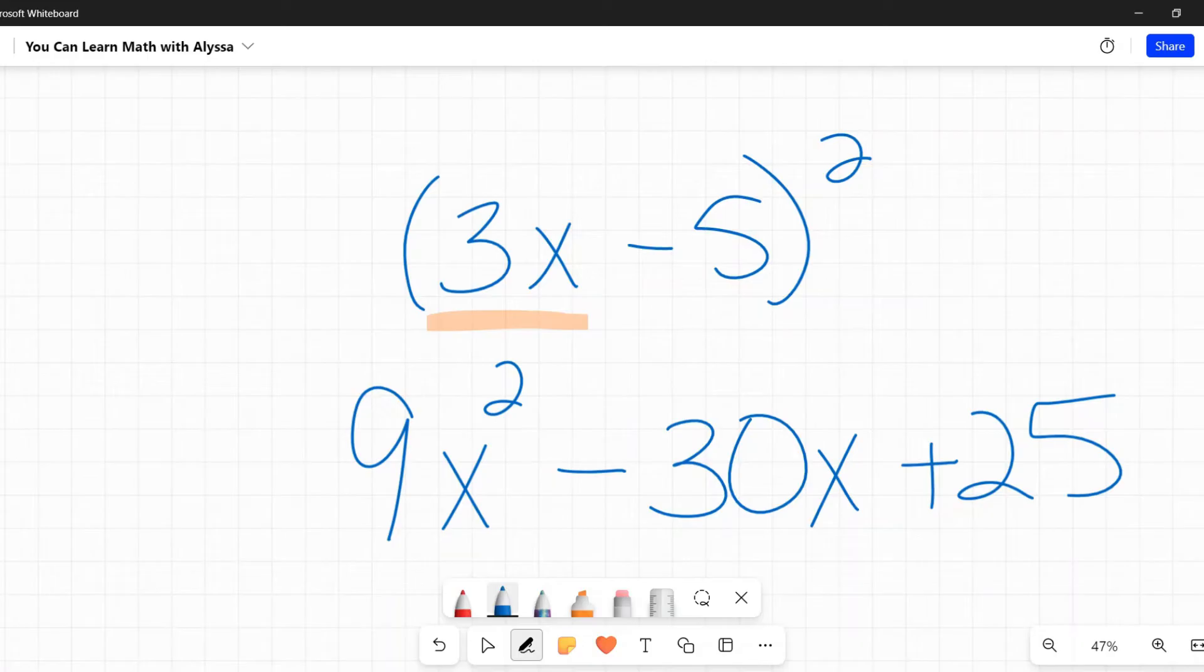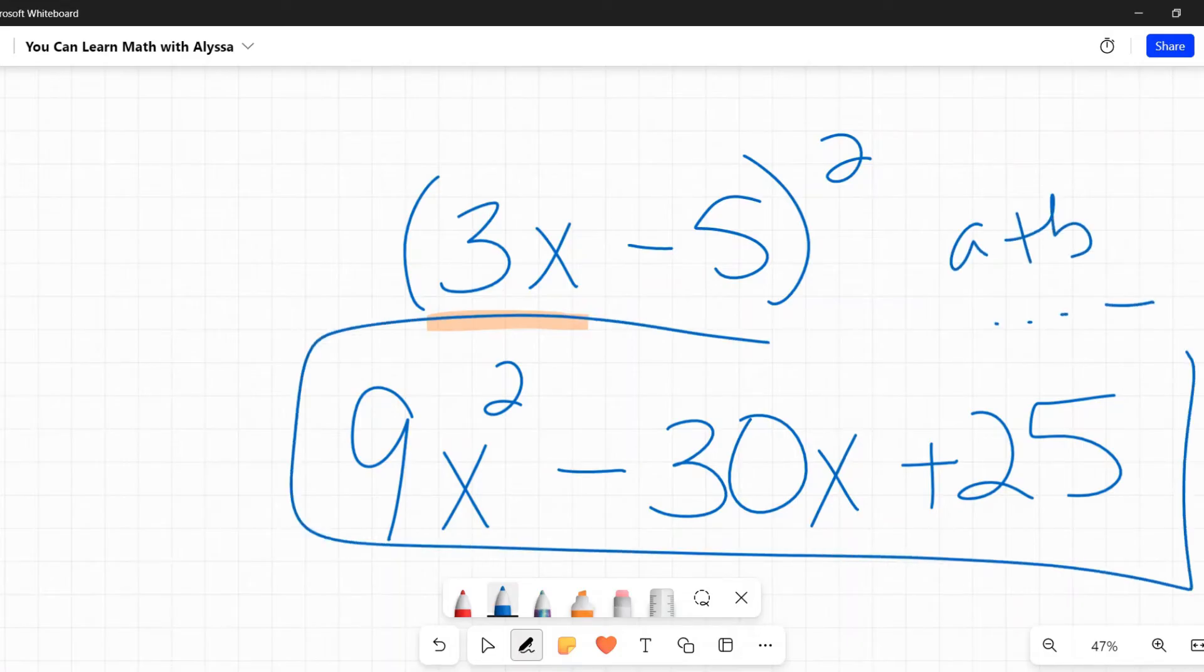Now, this depends on your teacher and your book and whatever worksheet you're working on. Sometimes they want you to write out the whole 3x minus 5 times 3x minus 5. Whatever they tell you to do as far as showing your work, please do it. You do not want to get points taken off when you know the right answer.